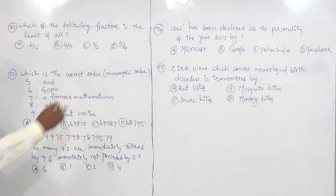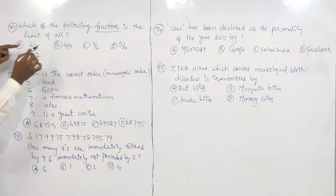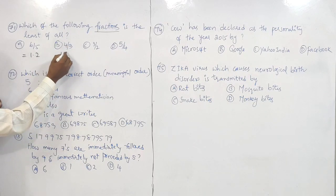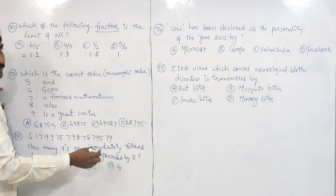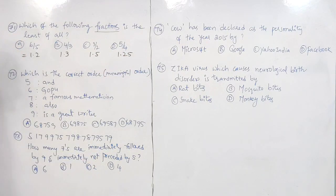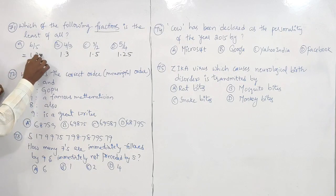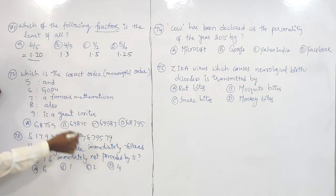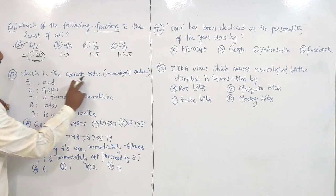Question 71 is related to fractions in arithmetic: which of the following is the least fraction? Dividing the fractions into decimals: 1.3, 1.5, 1.25, 1.2. So 1.20 is the smallest, then 1.25, 1.3, 1.5 in ascending order. 6/5 equals 1.2 which is the smallest.